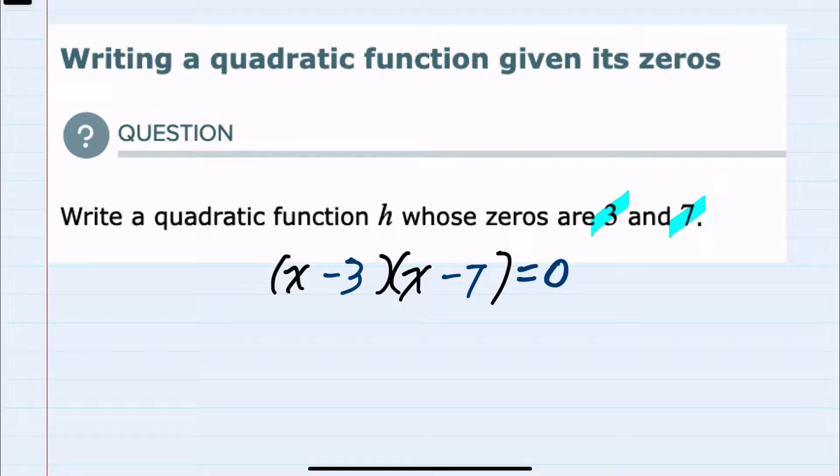So we have sort of reverse engineered our zeros into each one of these terms. And since we now know that this quadratic will have zeros at 3 and 7.